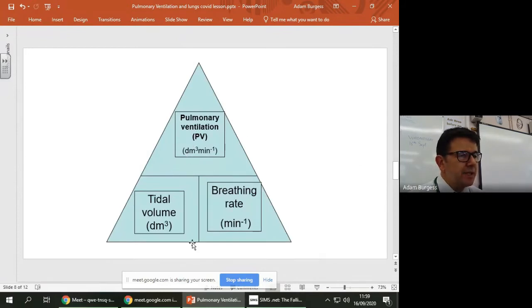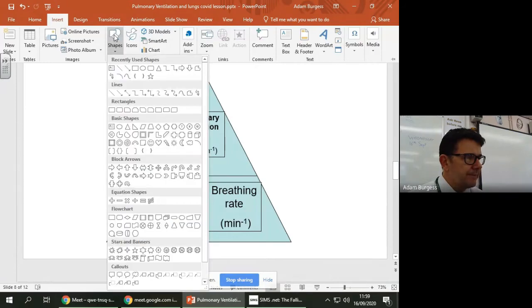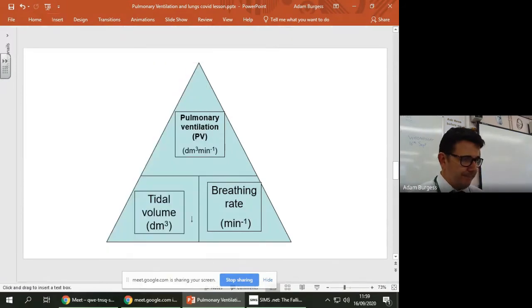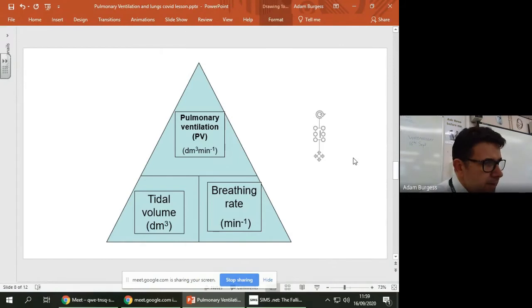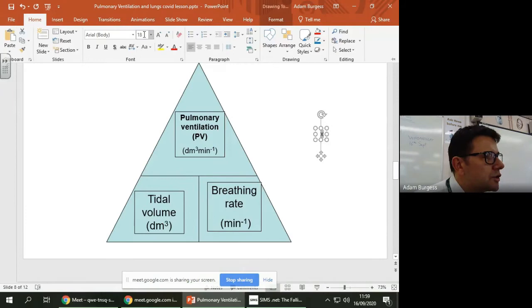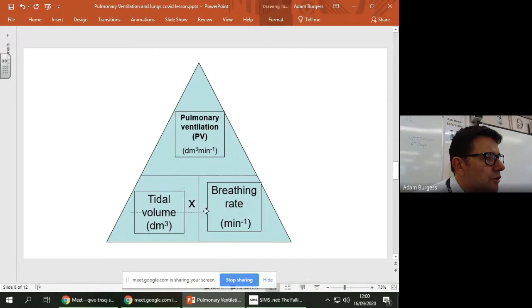So pulmonary ventilation, to work out pulmonary ventilation, you need to take tidal volume times, that's not very clear, not very clear. So, oh, anyway, times breathing rate. Wait a minute, I want to include that. So that would be times. Okay, there you go.